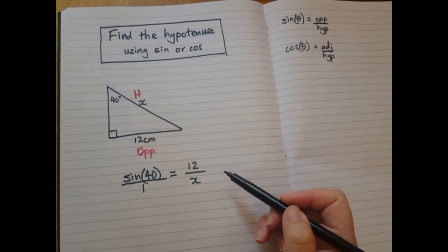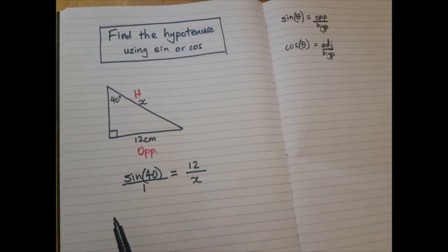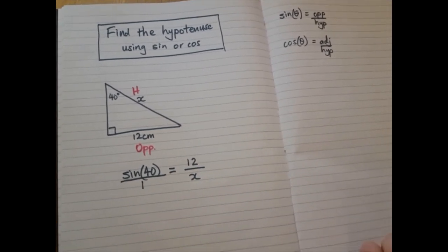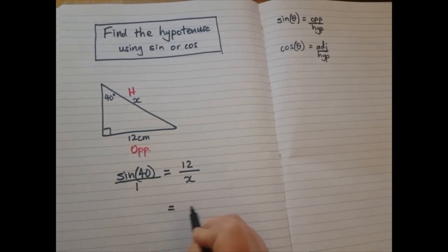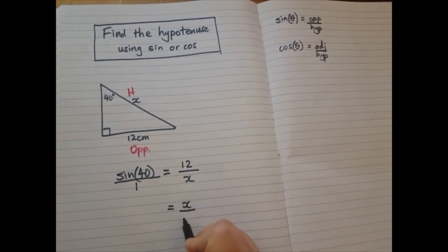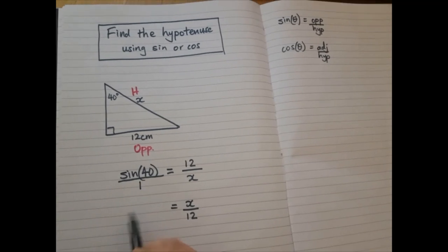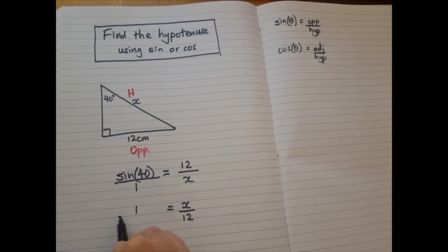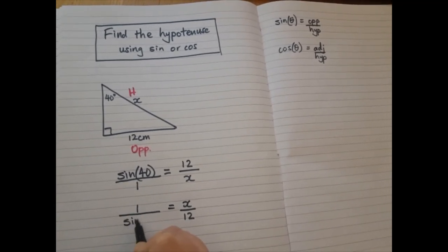And now we are going to invert both fractions. So turn them both upside down. Here we go. This one becomes x over 12, and this one becomes 1 over sin 40.